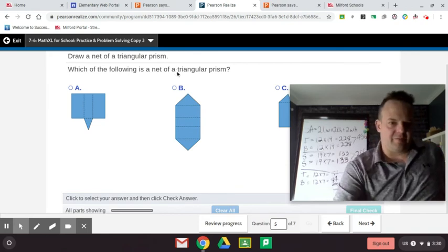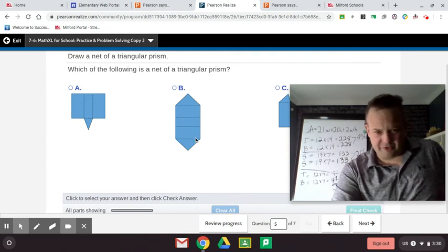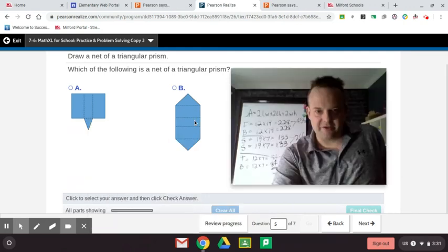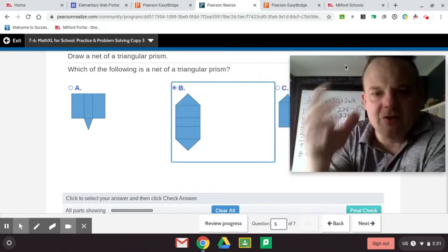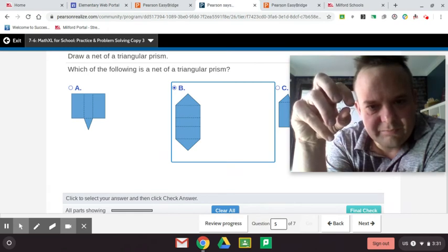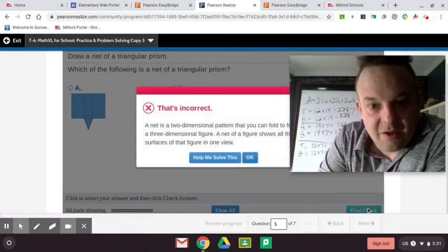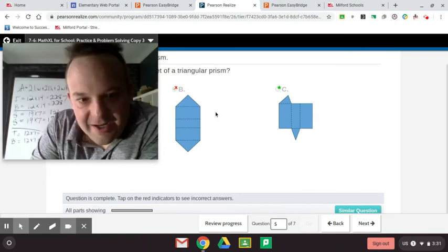Alright, almost done here with this assignment. Draw a net of a triangular prism. Alright, well this one is not complete. This just doesn't look great. That would not fold up right. Wait. That triangle is not congruent to that triangle. Maybe this is it. How would this fold up? Would this fold up right? I guess it would. I'm trying to visualize it folding. Do they want that one? I don't know if that will fold up right. This could be a glitch. What? It was this one? Alright guys, is it just me or do you see that this face is not congruent to that face?